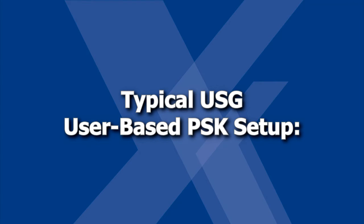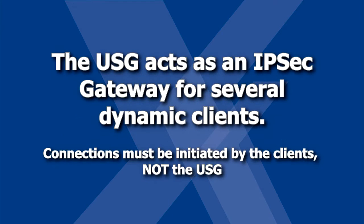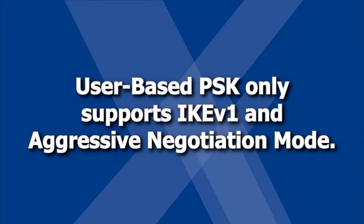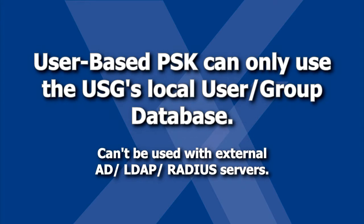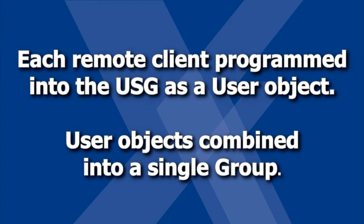Before we begin, understand the setup of user-based PSK. The USG acts as an IPsec gateway for several clients, so the VPN connection must be initiated by the clients, not the USG. User-based PSK is only supported by IKE version 1 using aggressive negotiation mode. Also, the USG only supports the local user database, so you'll need to create a local user account as a USG user object for every client that needs to connect, and then put those users in a local USG group object.